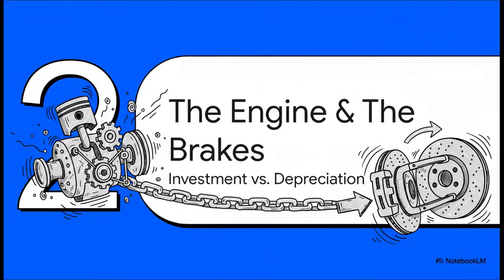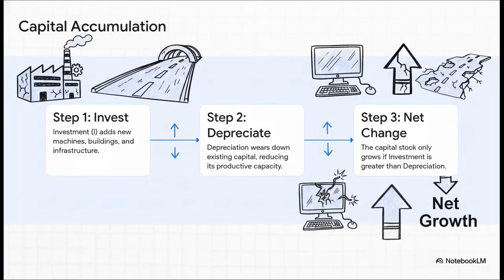So if investment is the engine pushing the economy forward, adding more and more capital, what's holding it back? There's another force at play: depreciation. That's the fundamental tug of war. On one side, investment is building new factories and roads. On the other side, depreciation is the natural wear and tear of everything — roads get potholes, machines break down, buildings get old. You only get real growth when the new stuff you're adding from investment is more than the old stuff you're losing to decay.